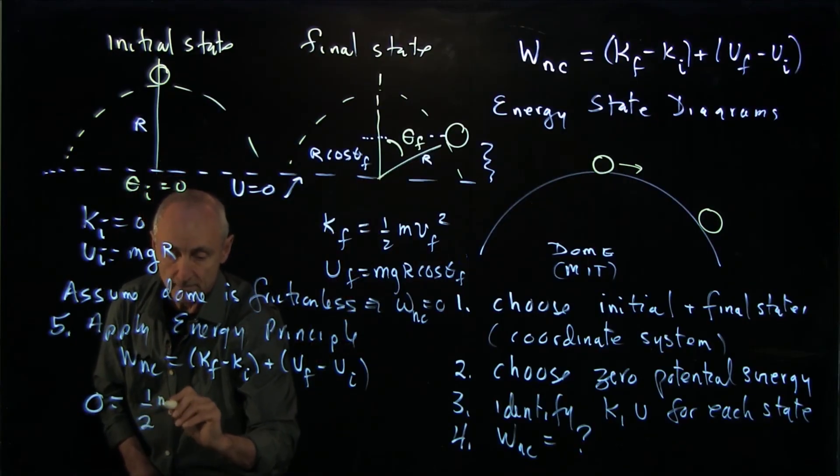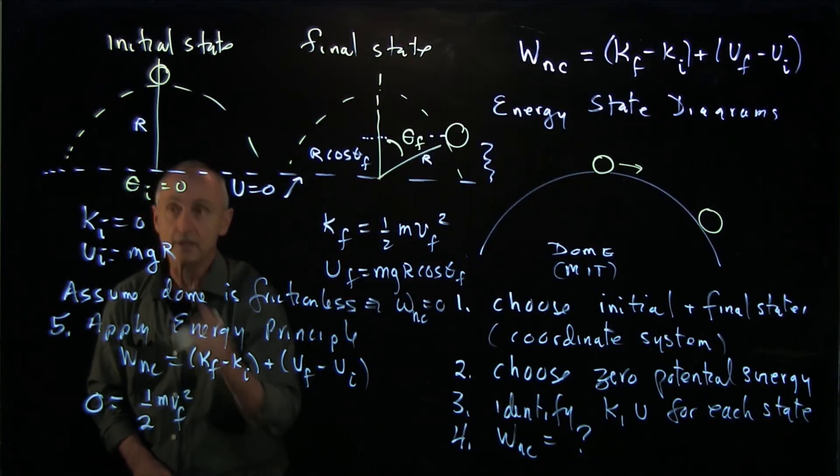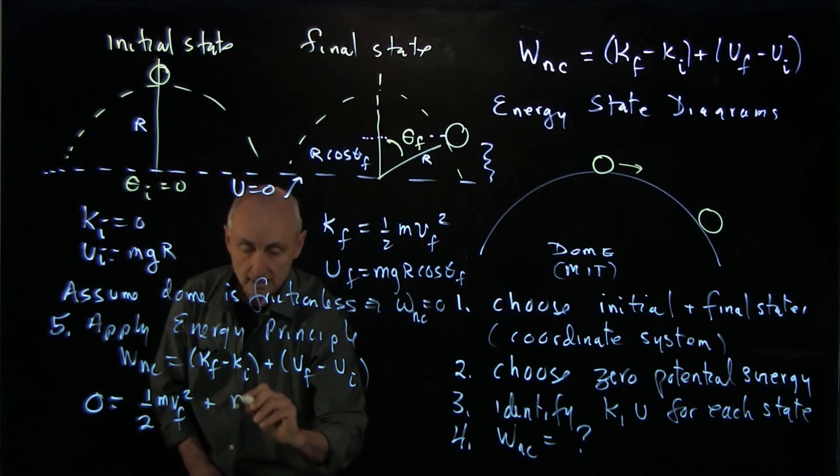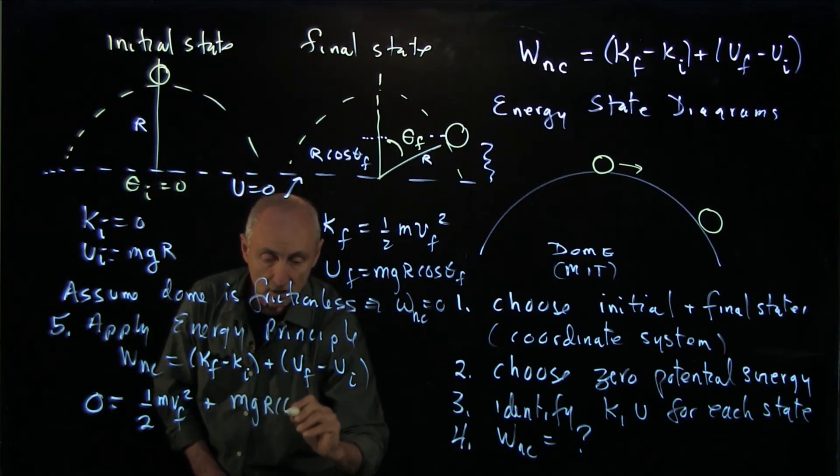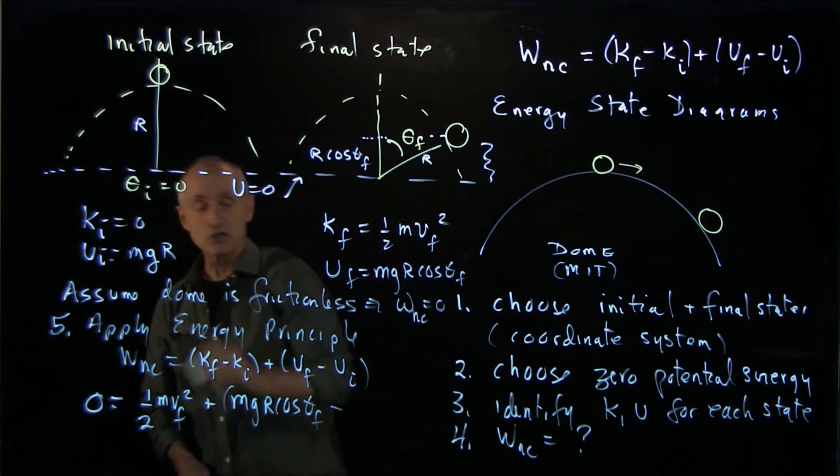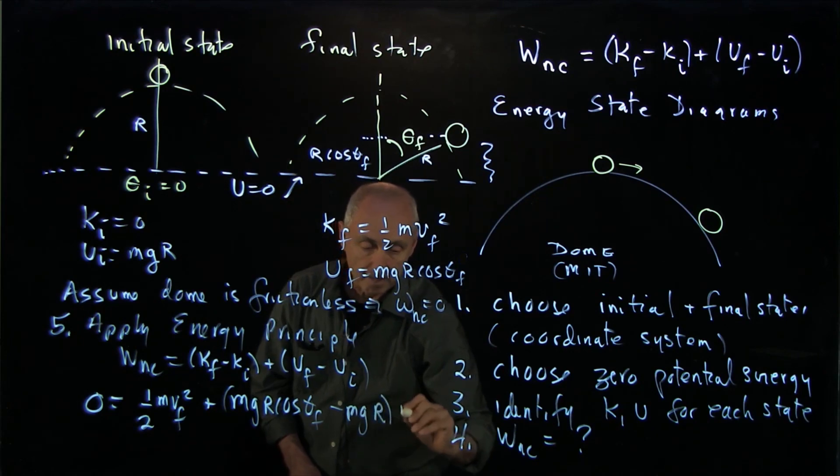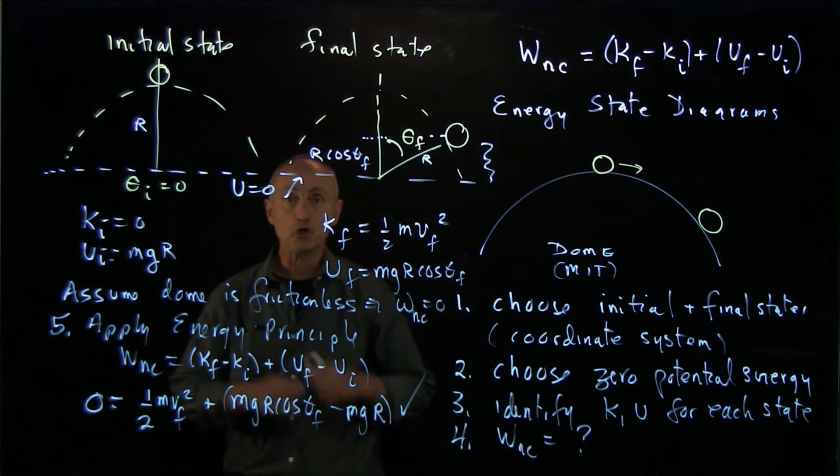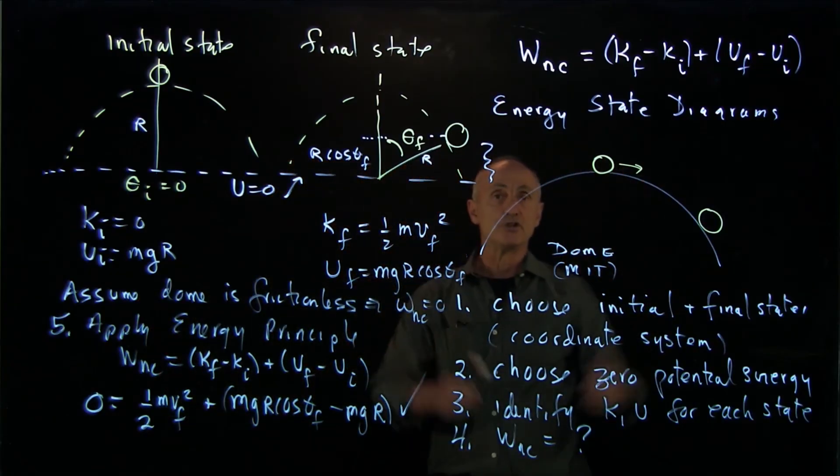That's 0, K final, 1/2 m v final squared, K initial, 0 plus U final, mg r cosine theta final, minus U initial, mg r. And there we have applied the energy principle using the tool of energy diagrams.